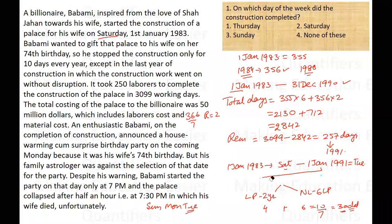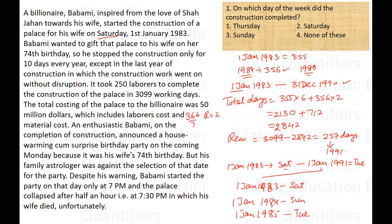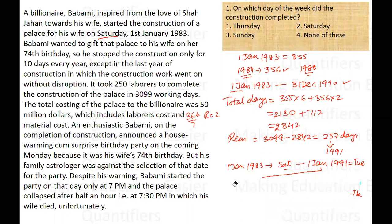You can also verify manually: 1st January 1983 was Saturday. 1st January 1984 was Sunday. Since 1984 was a leap year, 1st January 1985 was Tuesday. 1st January 1986 was Wednesday. 1987 was Thursday, and so on. If you keep doing this, you will get 1st January 1991 as Tuesday. That means 31st December 1990 was Monday.